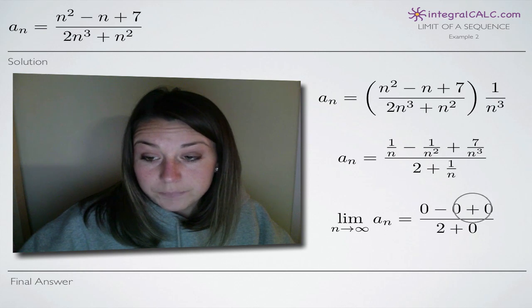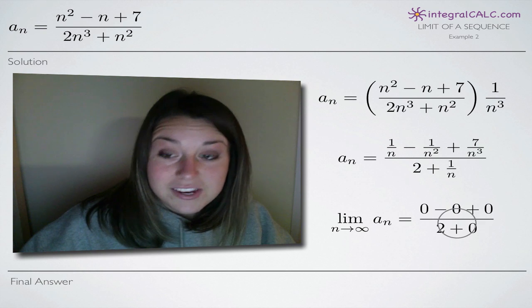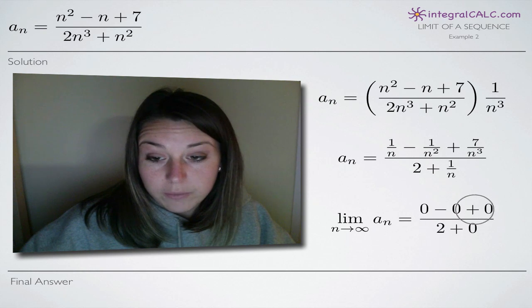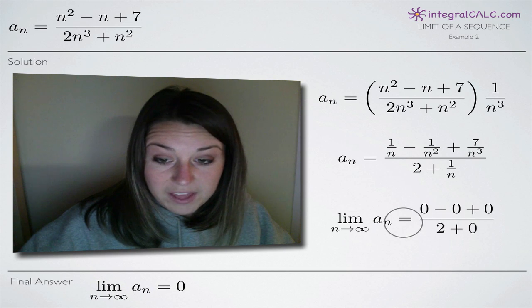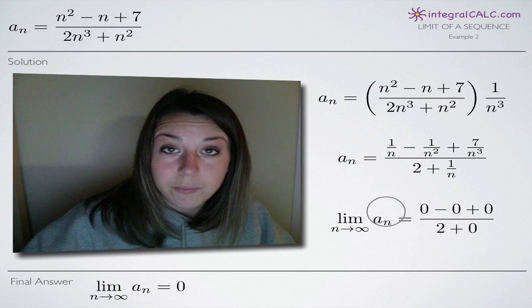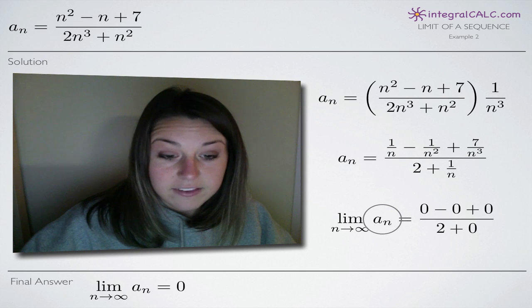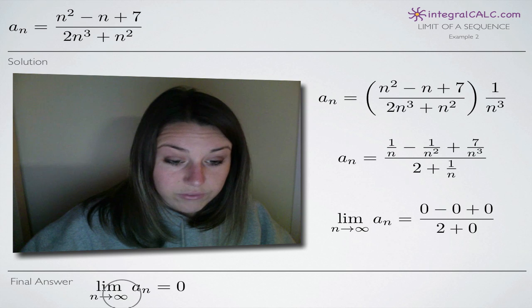0 minus 0 plus 0. So of course it doesn't matter what's in the denominator because 0 in the numerator means that our final answer is going to be 0 and that's correct. The limit as n approaches infinity of this particular sequence is 0. So 0 is the value that the sequence approaches as n goes to infinity.